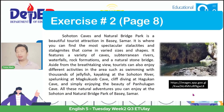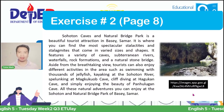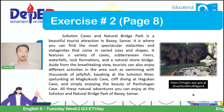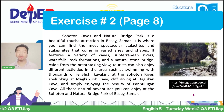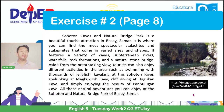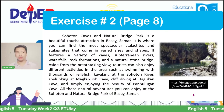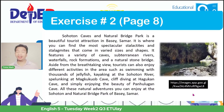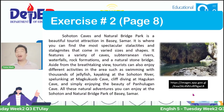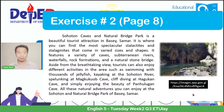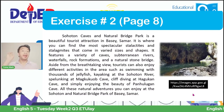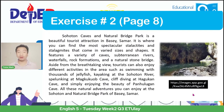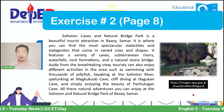With exercise number 2, found in page 8, this is an example of an enumeration text. Allow me to read the context. Sohotan Caves and Natural Bridge Park is a beautiful tourist attraction in Basay, Samar. It is where you can find the most spectacular stalactites and stalagmites that come in varied sizes and shapes. It features a variety of caves, subterranean rivers, waterfalls, rock formations, and a natural stone bridge. Aside from the breathtaking view, tourists can also enjoy different activities such as swimming with thousands of jellyfish, kayaking at the Sohotan River, spelunking at Maghukbuog Cave, cliff diving at Hagukan Cave, and simply enjoying the beauty of Panghulugan Cave. All these natural adventures you can enjoy at the Sohotan and Natural Bridge Park of Basay, Samar.